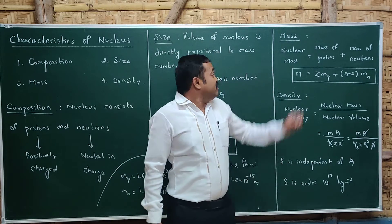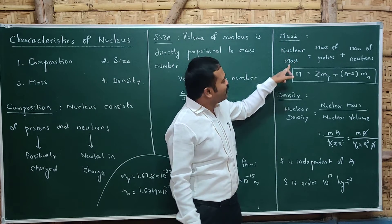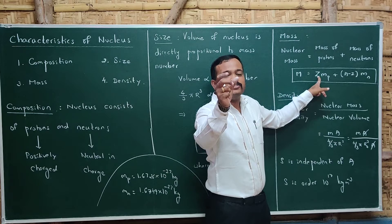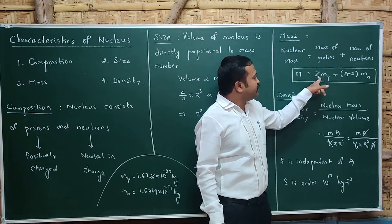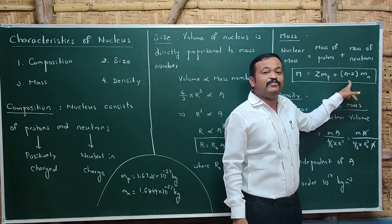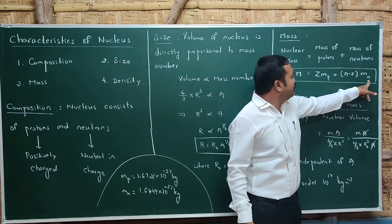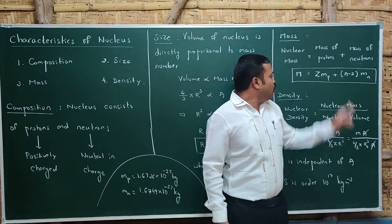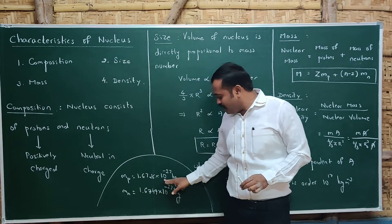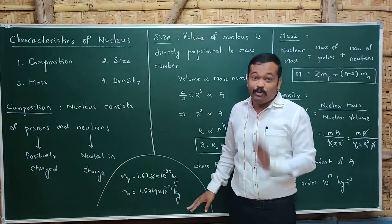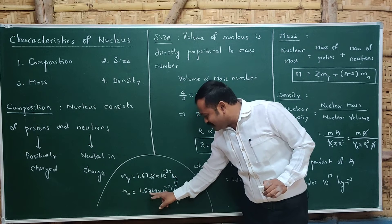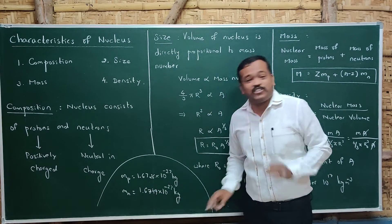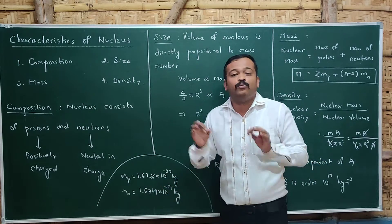The third characteristic is mass. Inside the nucleus, protons and neutrons are present. Nuclear mass M = Z·mp + (A−Z)·mn, where Z is the number of protons, mp is the mass of each proton, and (A−Z) is the number of neutrons with mn as the mass of each neutron. The mass of a proton is 1.67726 × 10⁻²⁷ kg, approximately 1 amu. The mass of a neutron is 1.6749 × 10⁻²⁷ kg — slightly heavier than a proton, but both are treated as approximately 1 amu.